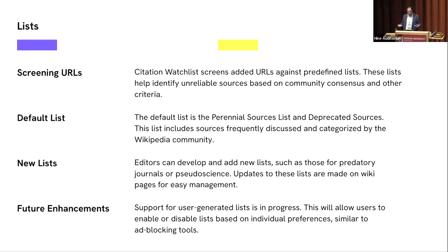Editors can discuss and create new lists. If you're interested in a particular area of sourcing — like unreliable scientific journals — you could create a specialized list for that use case. The perennial and deprecated sources lists only cover the very small number of sources that get subject to perennial debate. The vast majority of sources are not documented in any meaningful way, so if you want to engage in that kind of documentation, you could use the Citation Watchlist tool for that. It's just as easy as editing a wiki page.